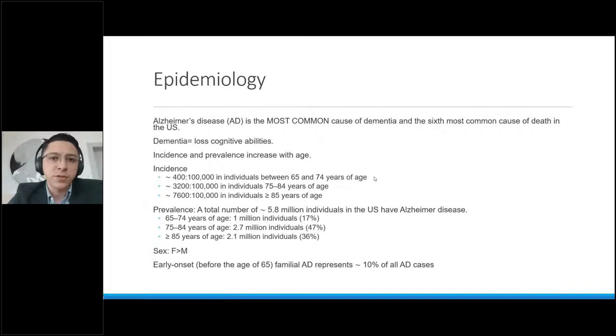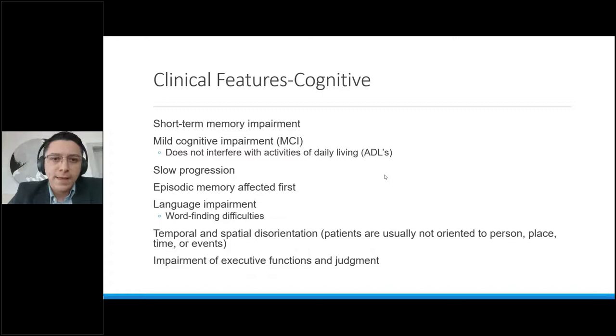In gender distribution, Alzheimer's disease is more commonly found in females than it is in males. And early onset Alzheimer's, which is usually found before the age of 65, tends to just comprise about 10% of all the Alzheimer's disease cases. What are the clinical features of Alzheimer's disease? This includes cognitive clinical findings, most commonly short-term memory impairment. There is a subtype that you will classify as mild cognitive impairment. And this is cognitive impairment that does not really interfere with the activities of daily living. Well, when we get to the diagnosis part, we'll describe what these activities of daily living may be.